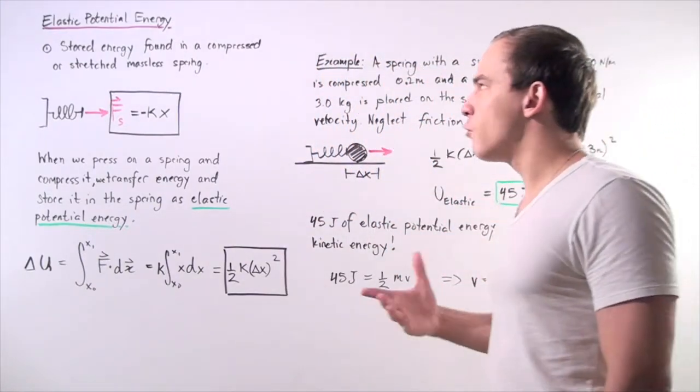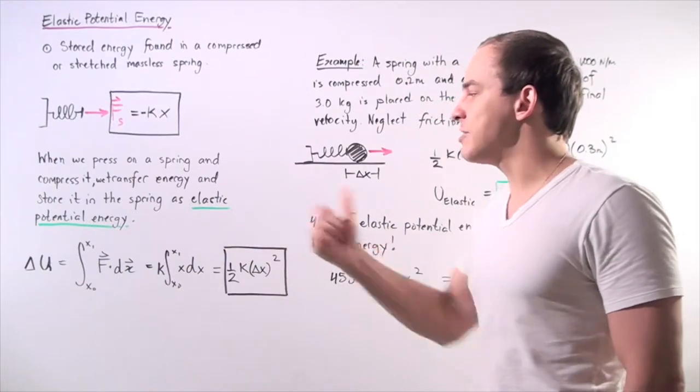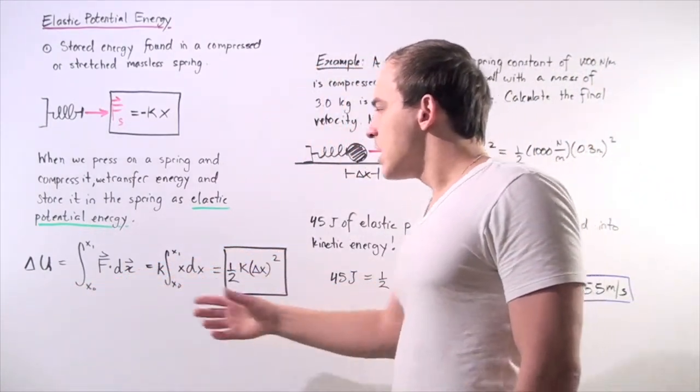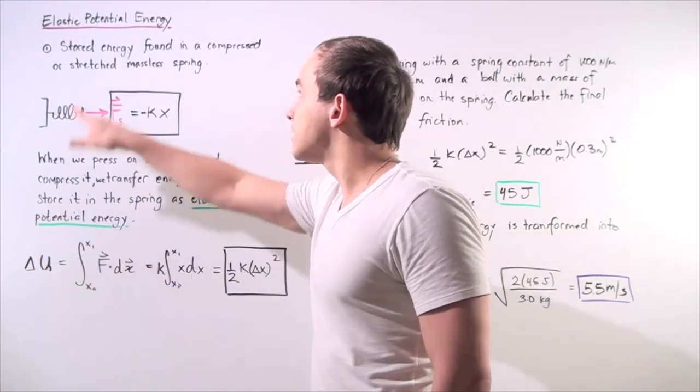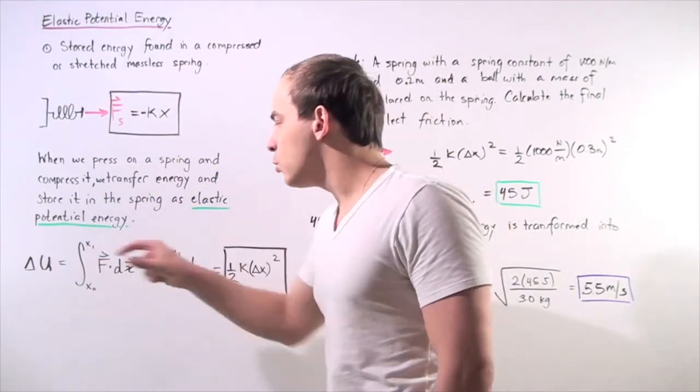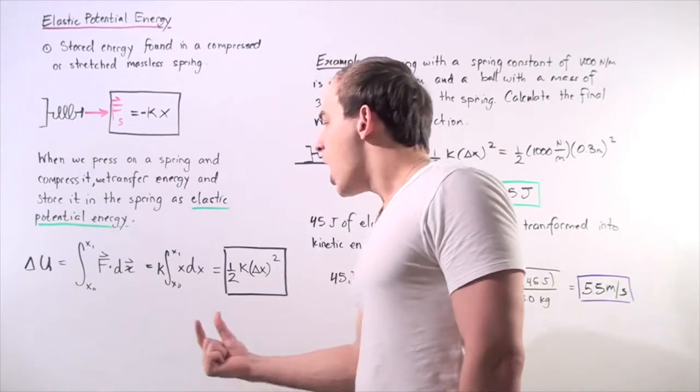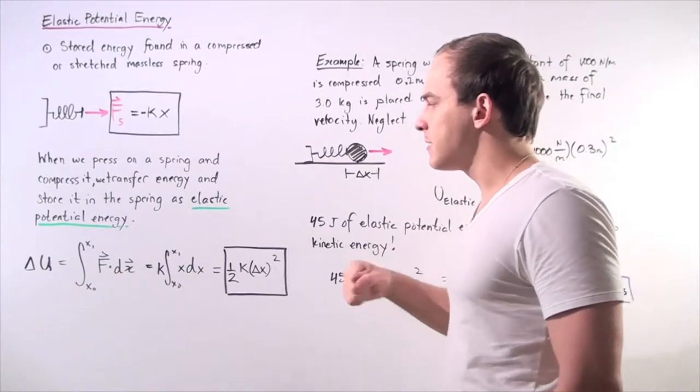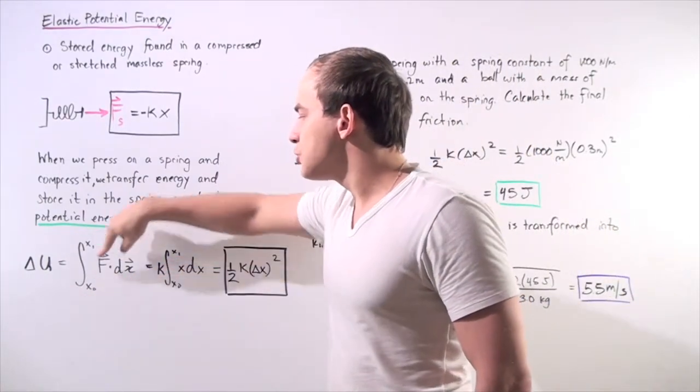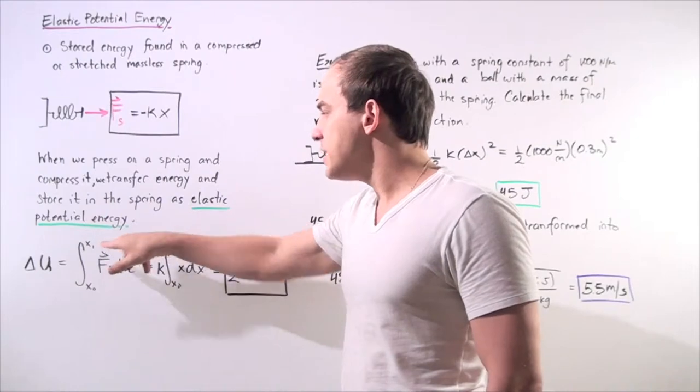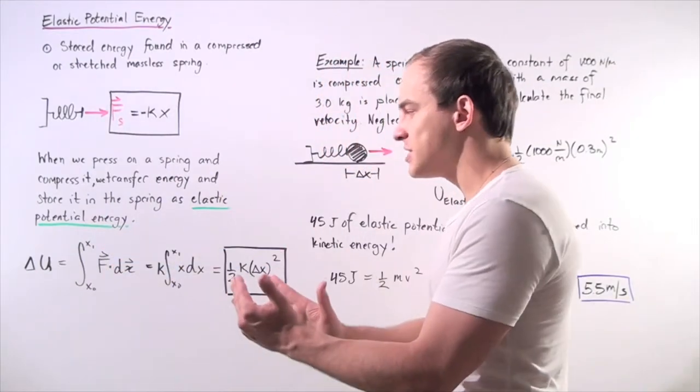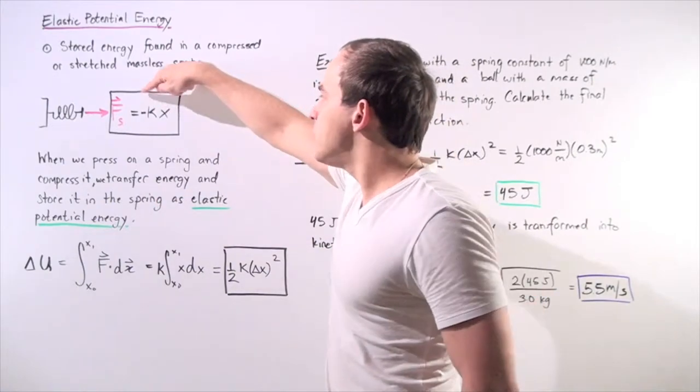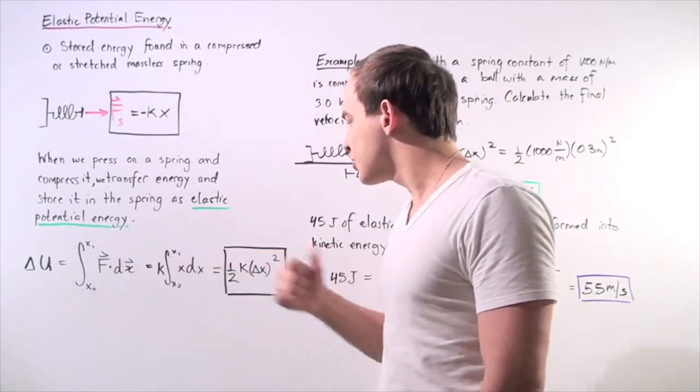Now, what exactly is the formula for this elastic potential energy? It's given by the following equation. The change in our elastic potential energy is equal to the integral of the dot product of the force and our infinitely small change in displacement from x₀ to x₁. We take the integral between these two points, our initial and final positions. If we plug in this formula for the force and integrate,